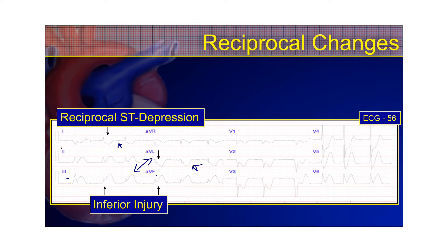If you look over at the precordial leads, all this ST segment depression you see is not a reciprocal change to the inferior leads. That's actually a reciprocal change to the posterior wall, which is often involved with your inferior wall MIs because of the way coronary circulation works.